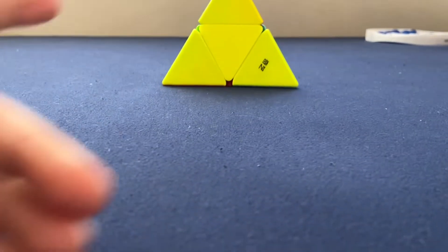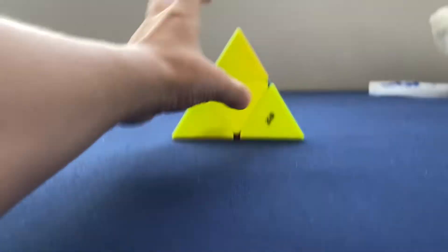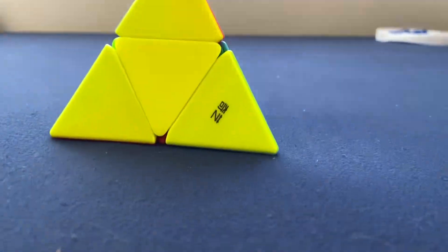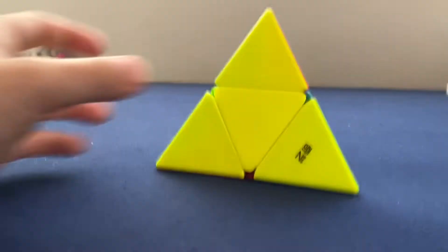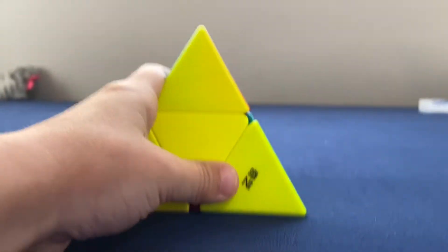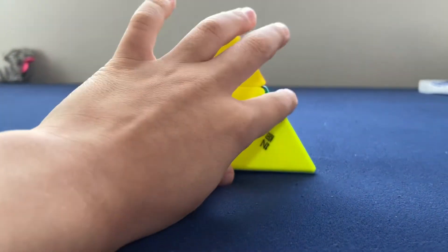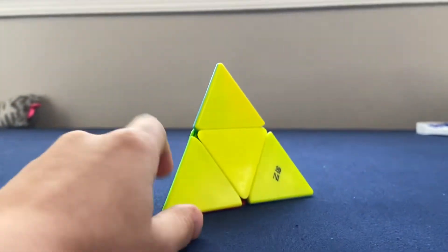Hey guys, it's the 2x2 Master, and today we'll be reviewing the Chi 2x2 Pyraminx. This is my first ever type of pyraminx. It's really good, really fast, and you can get it from Amazon. It's really cheap. I don't know how much it is because my mom got it for me.